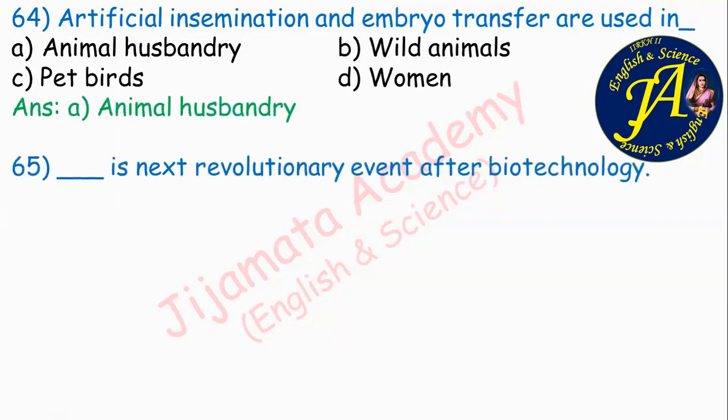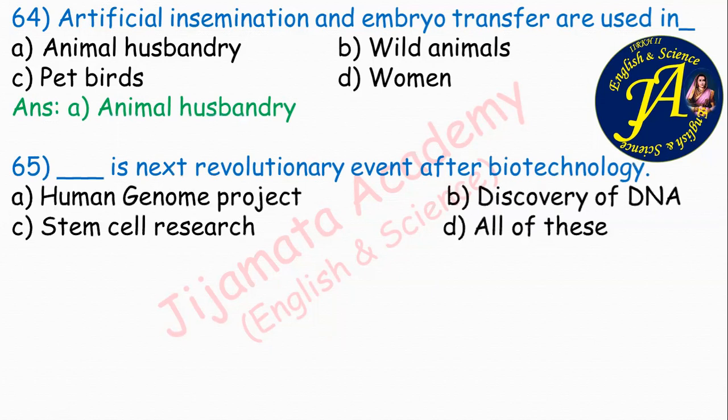Dash is the next revolutionary event after biotechnology. Options are human genome project, NGP, discovery of DNA, stem cell research, all of these. Correct answer is option C: stem cell research is the next revolutionary event after biotechnology.